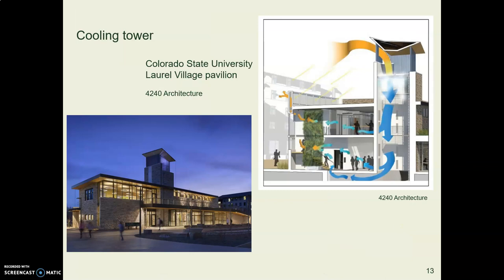Here's a similar cooling tower at Colorado State University. There's a wetted pad at the top — the wetness causes water to evaporate, making the air cooler and more dense, so it falls down the tower.